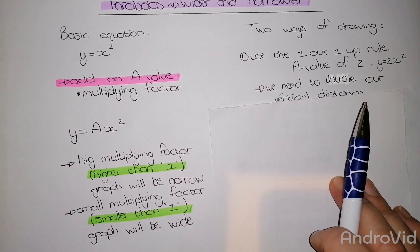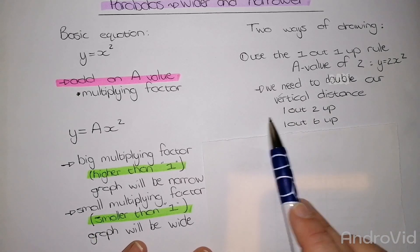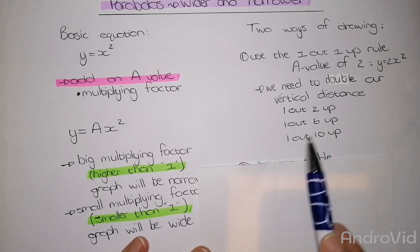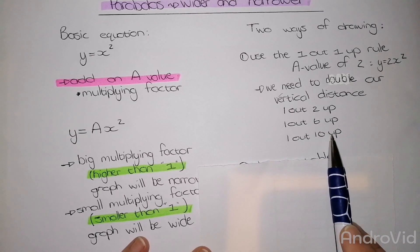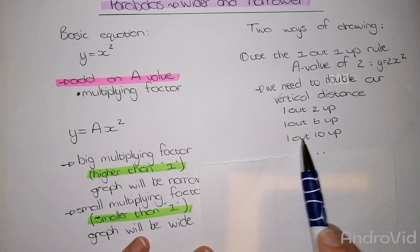In this case, we will have 1 out 2 up, 1 out 6 up, and 1 out 10 up. Now, we can just plot these coordinates and connect the dots.